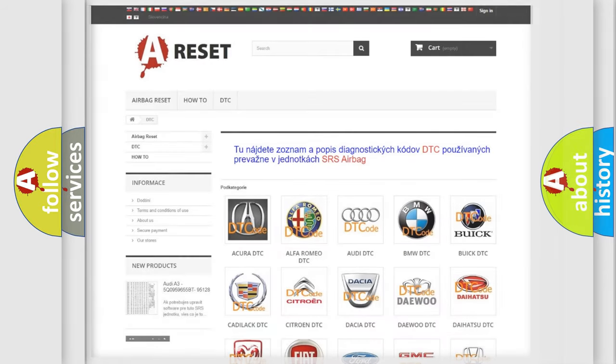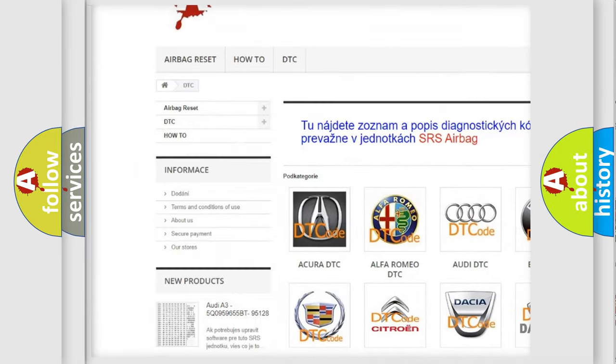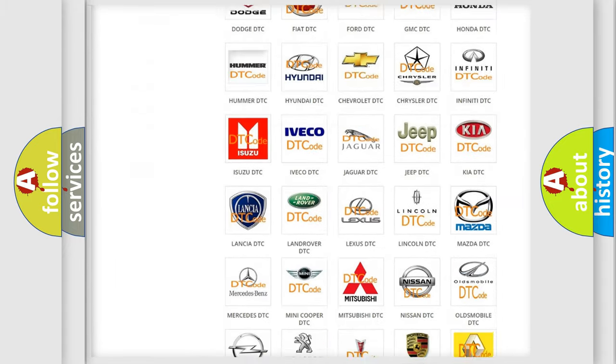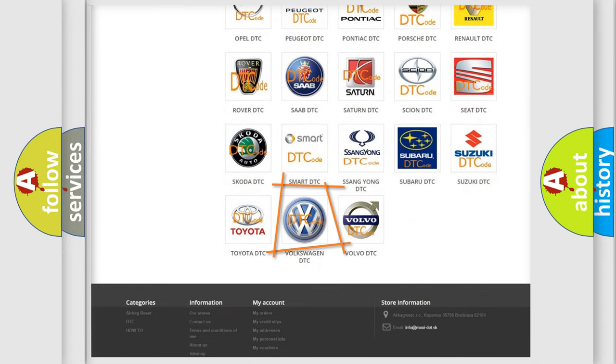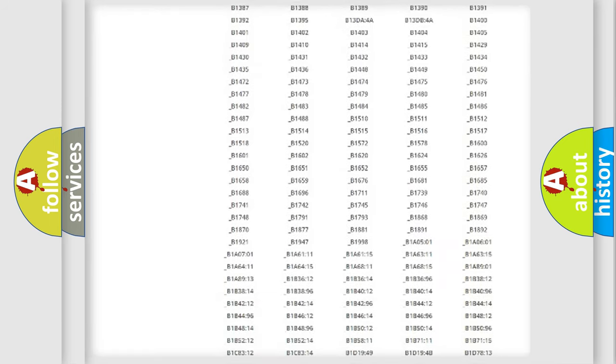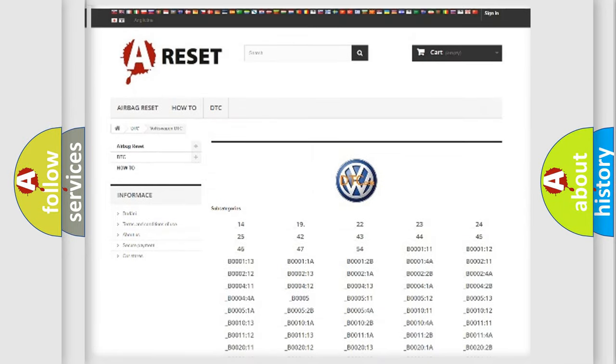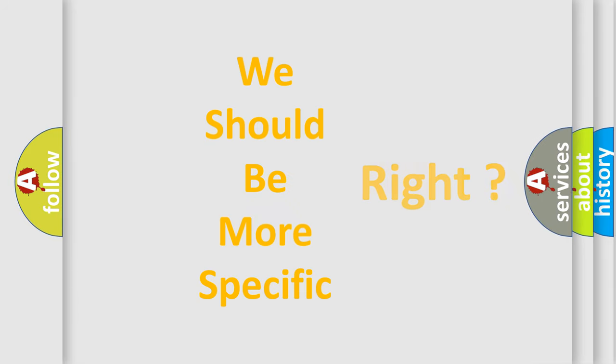Our website airbagreset.sk produces useful videos for you. You do not have to go through the OBD2 protocol anymore to know how to troubleshoot any car breakdown. You will find all the diagnostic codes that can be diagnosed in Volkswagen vehicles, and many other useful things. The following demonstration will help you look into the world of software for car control units.